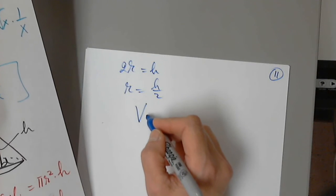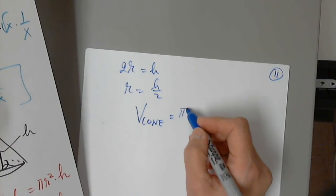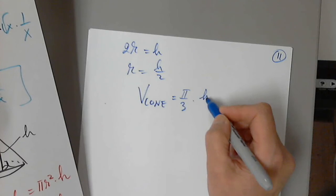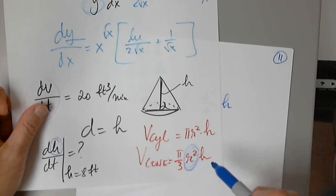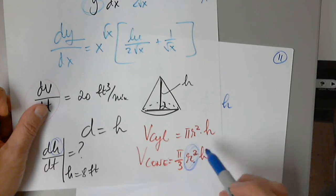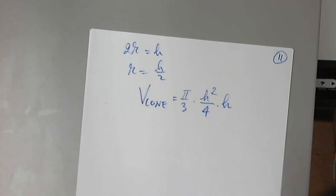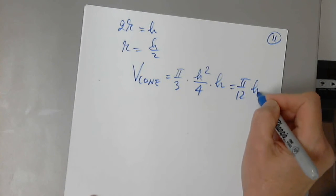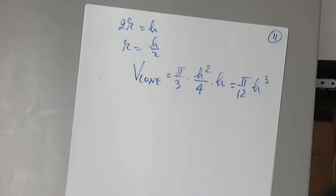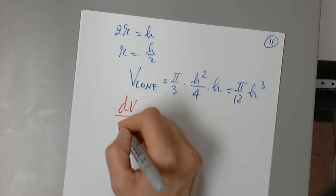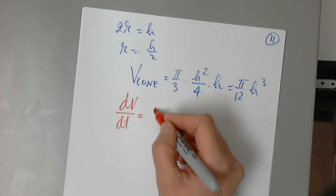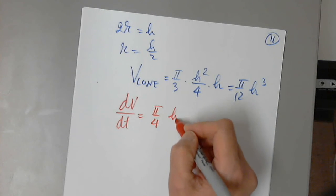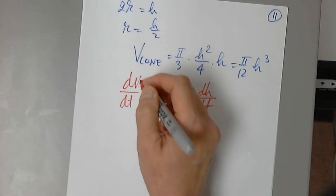So I write that 2r equals the height, or r equals h over 2. Then I write the volume of the cone again as π over 3 times h squared over 4 times h, because I replaced r by h over 2 and I have to square it. And now I have π over 12 times h to the third. So now we can differentiate: dv over dt equals 3 divided by 12, so it's π over 4 times h squared times dh over dt.